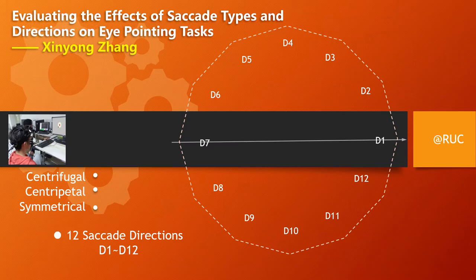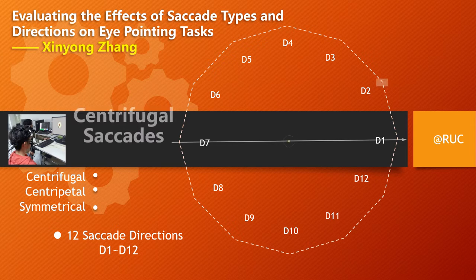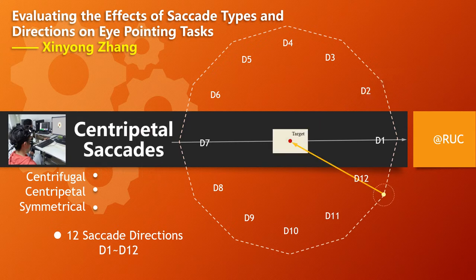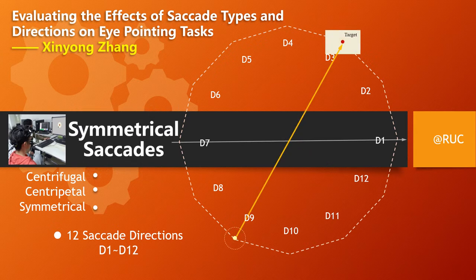This work reveals how sciatio types and directions can affect human performance in pointing tasks. Three sciatio types were used in this work, including centrifuge, centripetal, and symmetric sciatios. The tasks were performed in 12 sciatio directions.